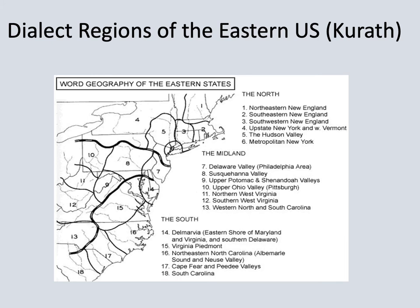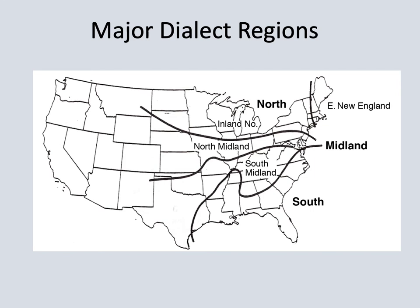A little bit more detailed picture, again from Kurath's work, shows you that within each of those large regions, there are several sub-regions. Extending those lines westward, you can see how they play out across the country. It's traditional to distinguish within the Midland region a North Midland and a South Midland, with the boundaries usually drawn about where they are shown here.